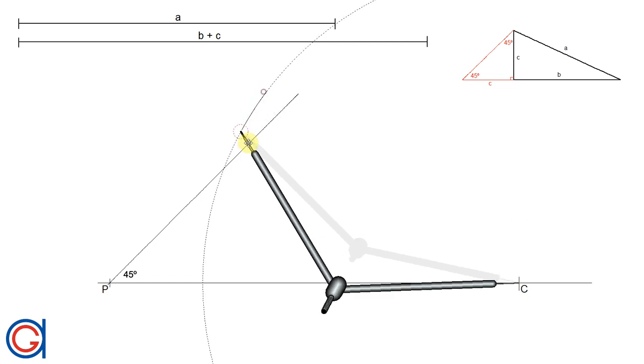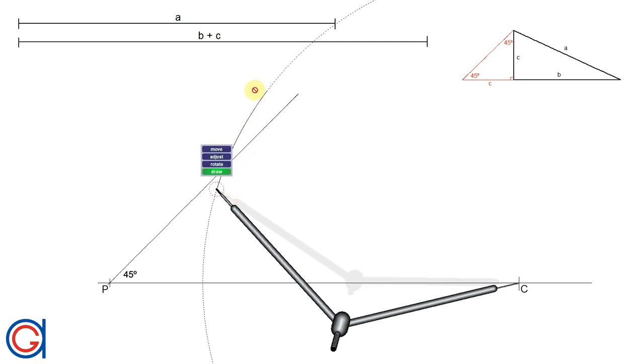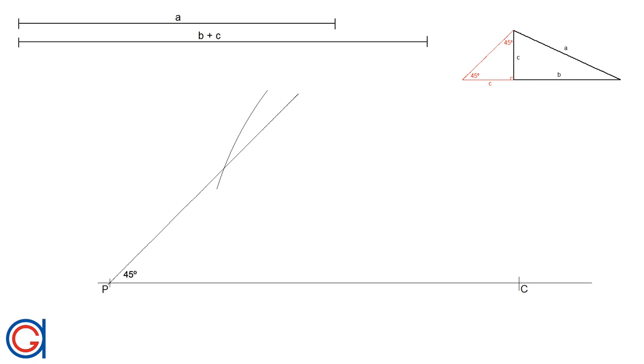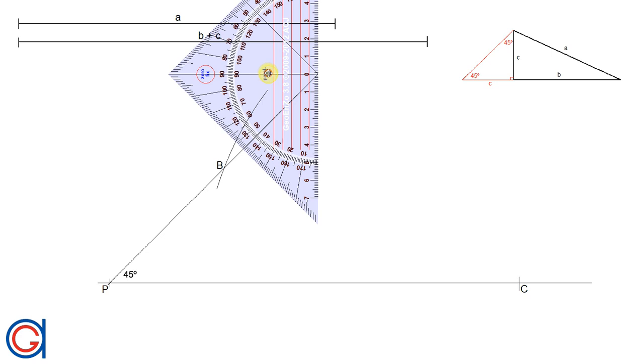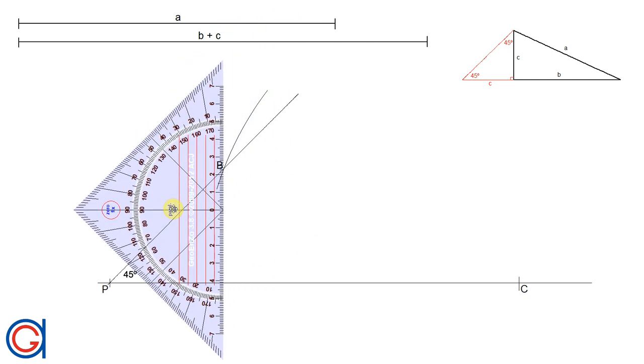And this will give us vertex B of the triangle that we're going to draw. The next step is joining this vertex B with a perpendicular line to the horizontal line PC as shown here in a thicker line.